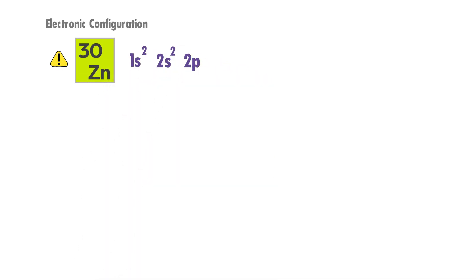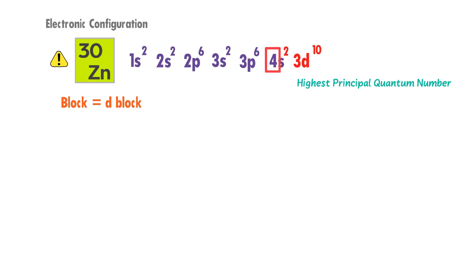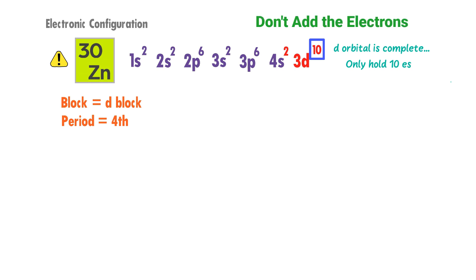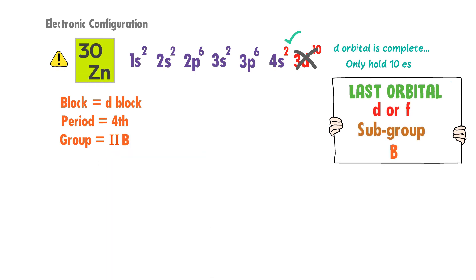Now consider a special case: zinc, with atomic number 30. The electronic configuration of zinc is 1s2, 2s2, 2p6, 3s2, 3p6, 4s2 and 3d10. The last electrons of zinc are present in the D orbital, so zinc is a D block element. The highest principal quantum number of zinc is 4, so zinc is present in the fourth period. Remember that the D orbital is complete because it can hold only 10 electrons. In such cases, do not add the electrons in D and S orbitals — directly take the number of electrons in the S orbital. There are two electrons in the S orbital, so the group number of zinc is 2nd. The last orbital of zinc is D, so the subgroup of zinc is B. Thus zinc is present in the second B group.